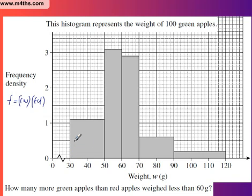Class width is 20. So we're going to do 20 times 1.1. So 20 times 1.1 is 22. So 22 in that one. Now this one is 10 across and 3.1 high. So 10 times 3.1 is going to be 31.